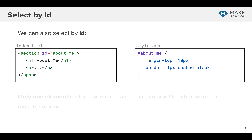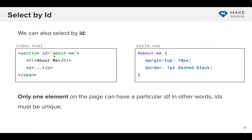An ID should be unique for the page, and you use it similarly to a class — you say ID equals and put a name. To select it with CSS, you use the hashtag. So just like the dot but with a hashtag instead, which denotes an ID. Here, the section would get margin of 10 and border of one pixel dashed black.